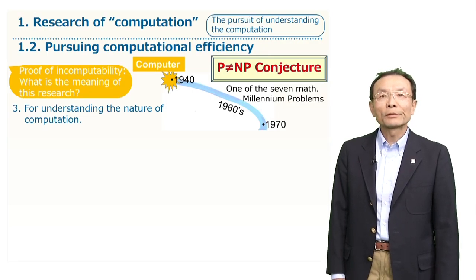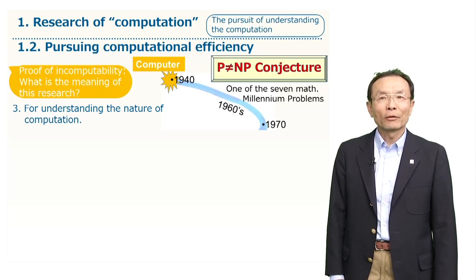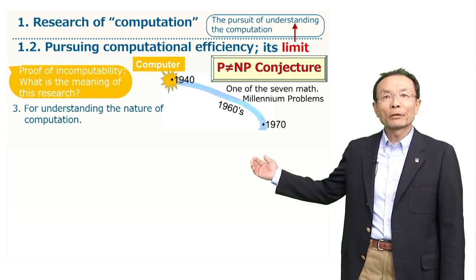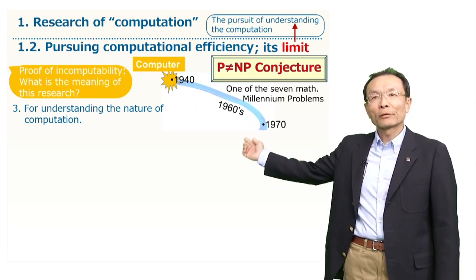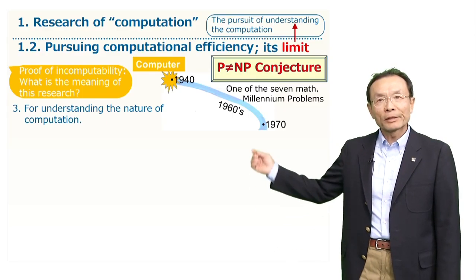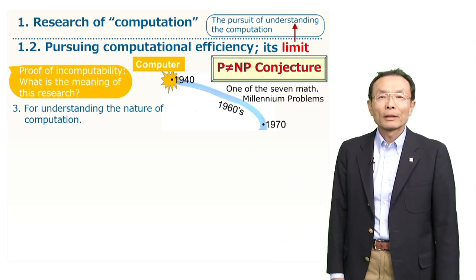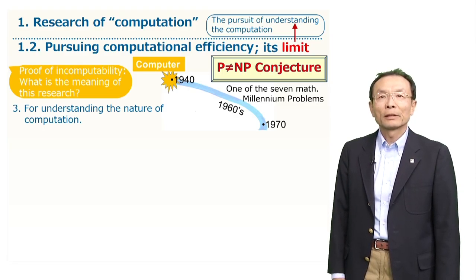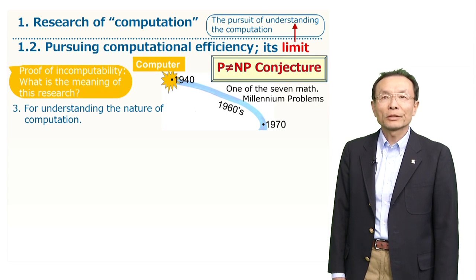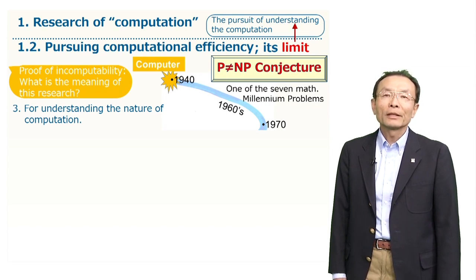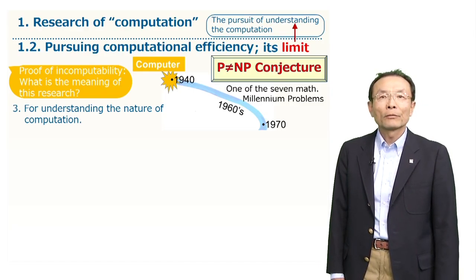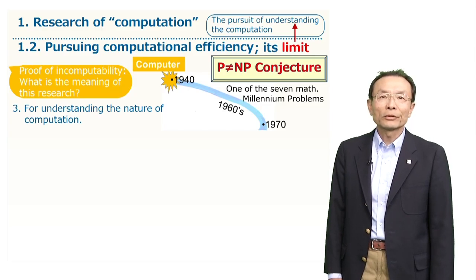The third motivation is for understanding the nature of computation. Investigating the P not equal NP conjecture is to study the limits of algorithmic efficiency. It is similar to the time where mathematicians studied the computability, the limits of computation, which led to the emergence of computers. In the history of mathematics, a breakthrough idea has been discovered or a new theory has been established from time to time through the research of impossibility.